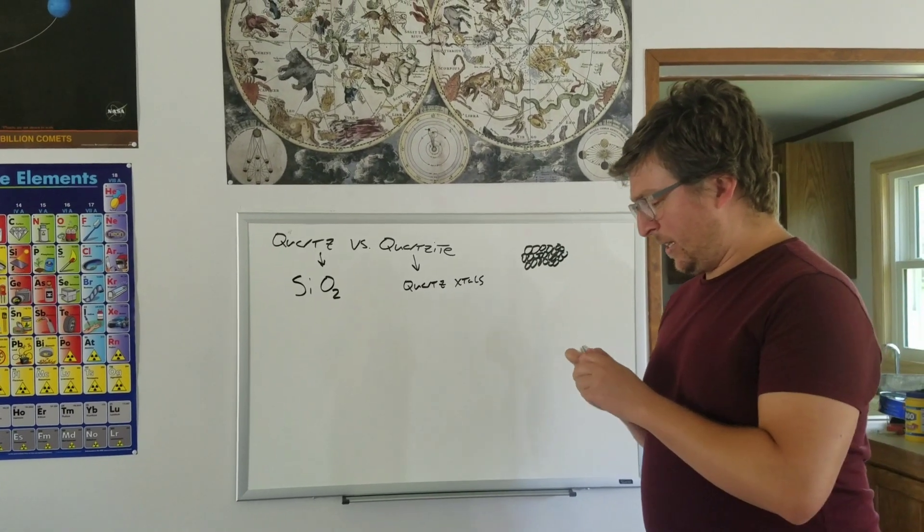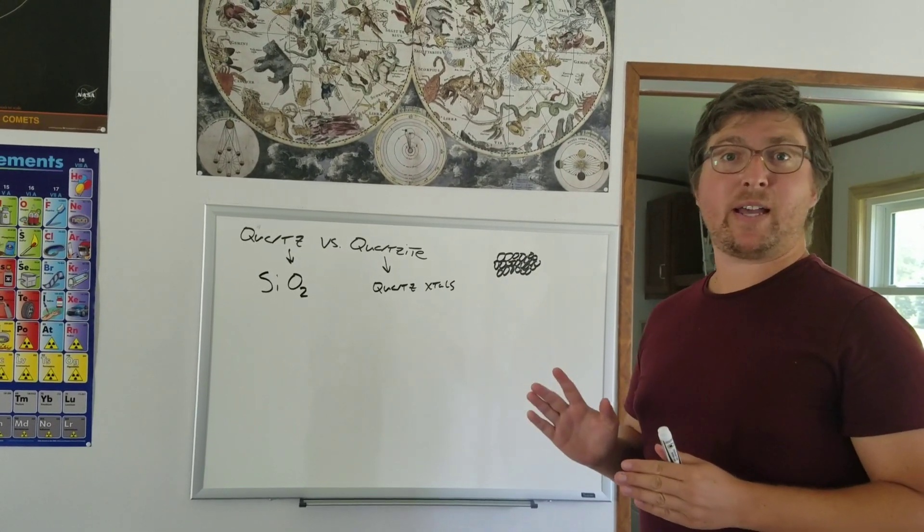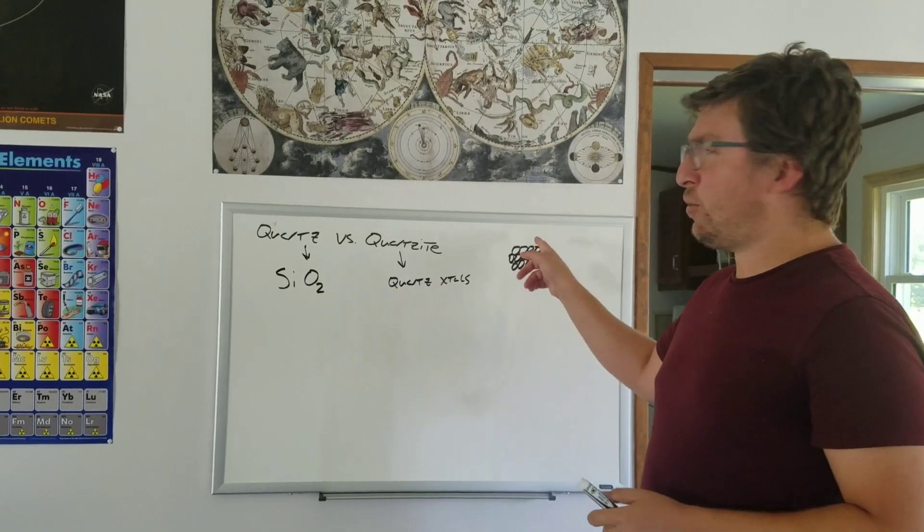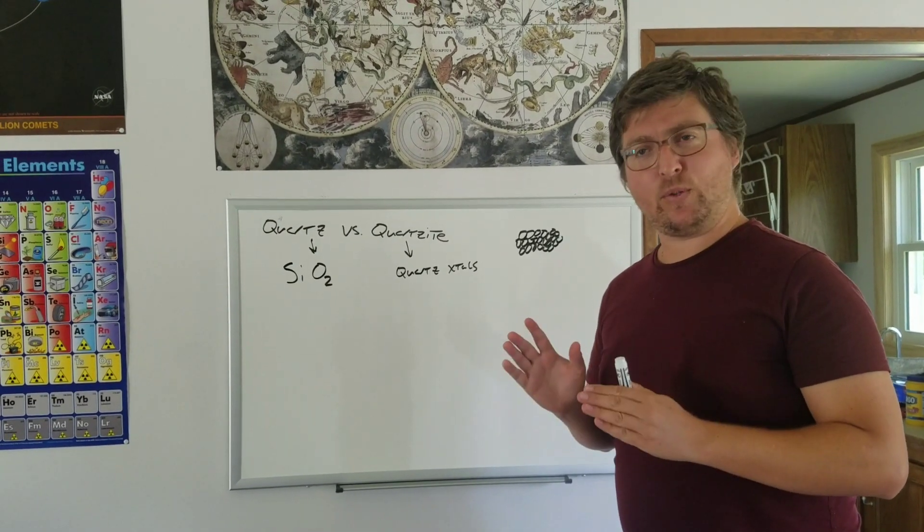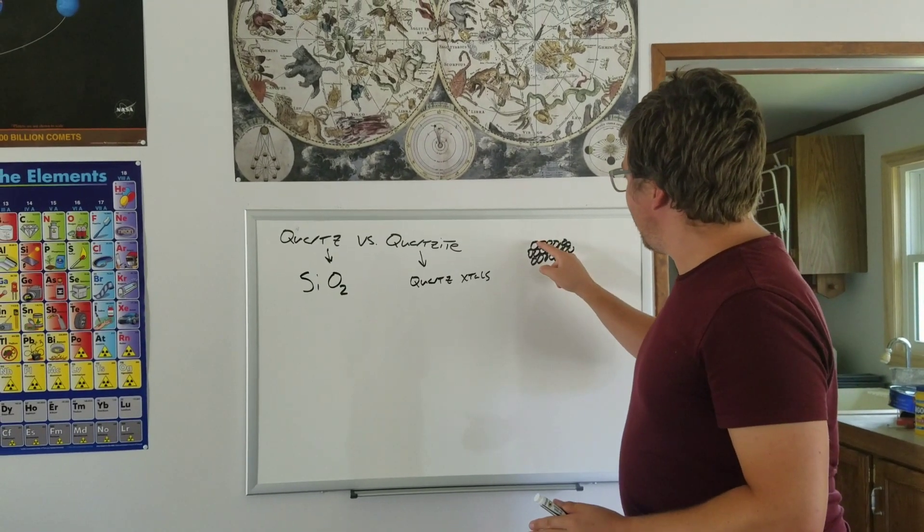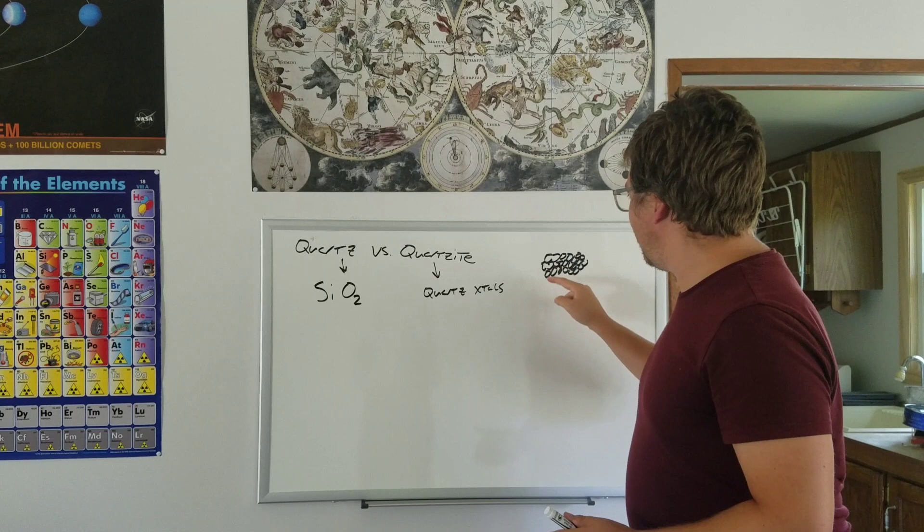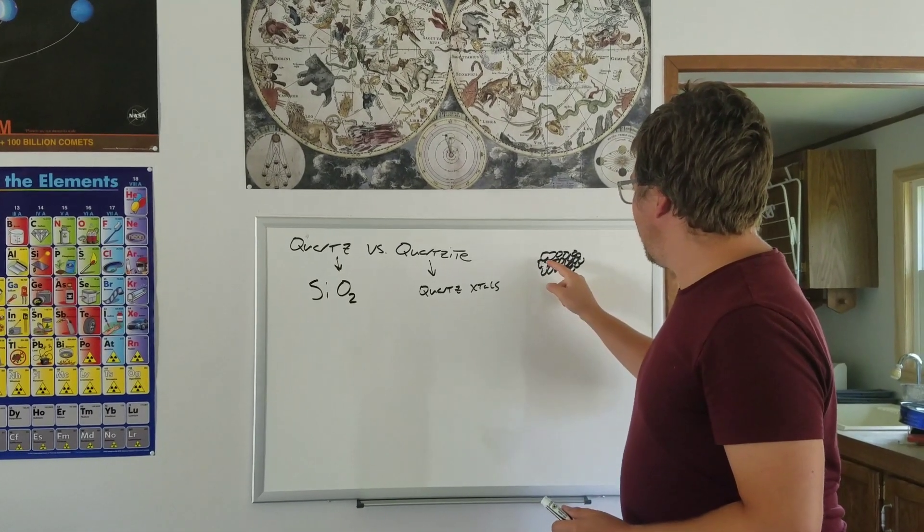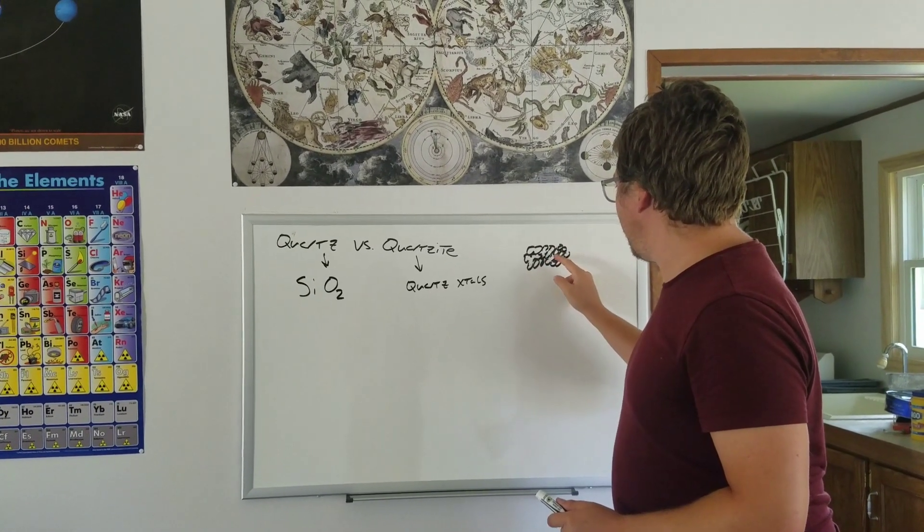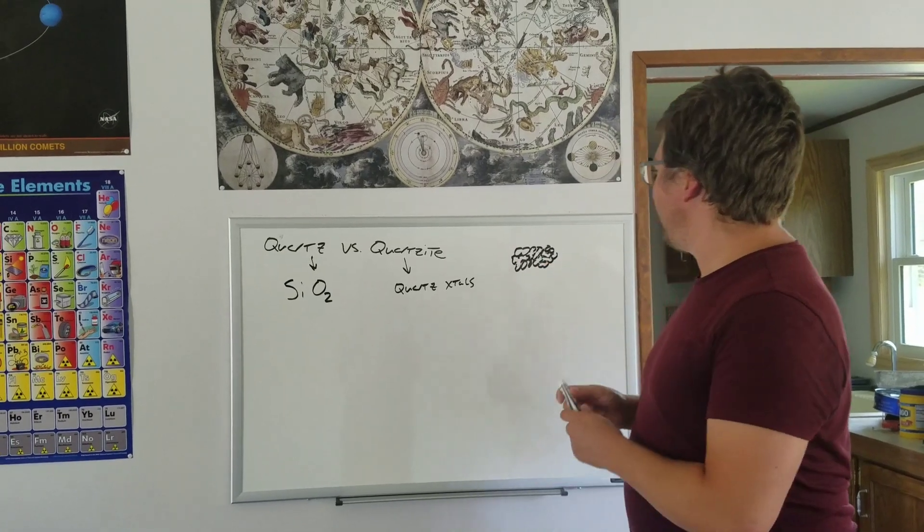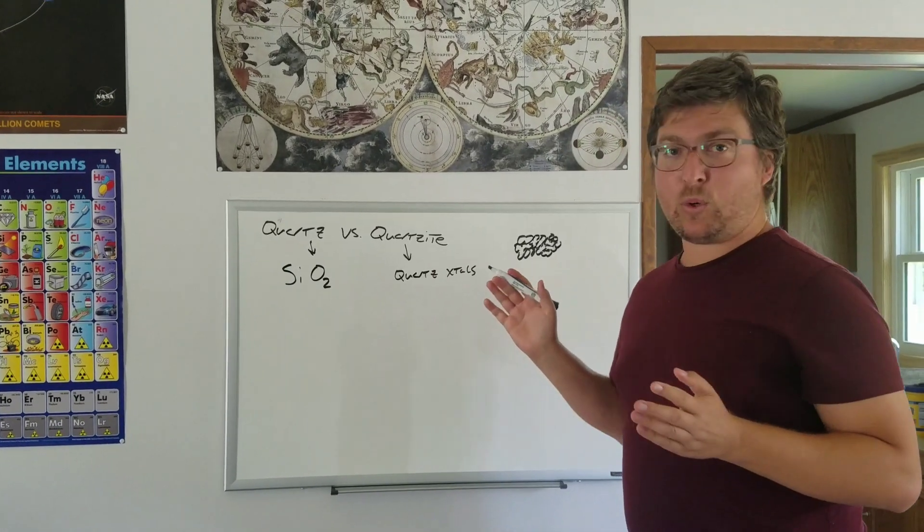And what happens is that it gets buried and it gets cooked at very high heat and even more importantly very high pressure. What happens is that the boundaries between these sand grains that are all pressed against each other begin to almost dissolve in a sense. They fuse. And so you end up with these grains that are starting to have their boundaries disappear.